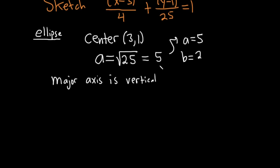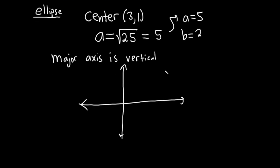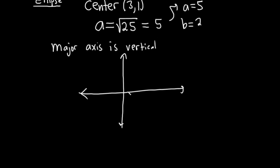My graphs aren't perfect. We'll do the best we can do here. So this is the y-axis. It's supposed to be a straight line. This is the x-axis. And then, so the center is (3, 1). Let me use a different color here. So we'll go 1, 2, 3, 1. And there's the center of our ellipse.